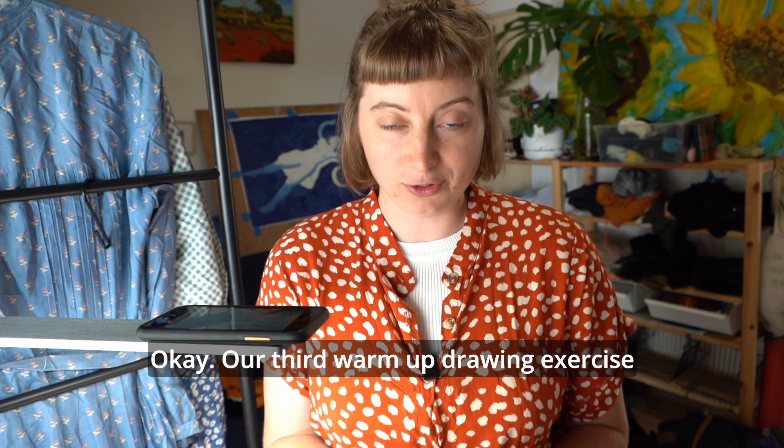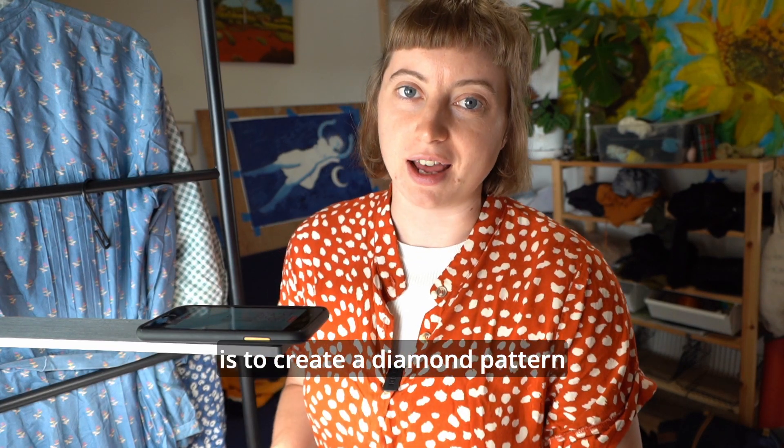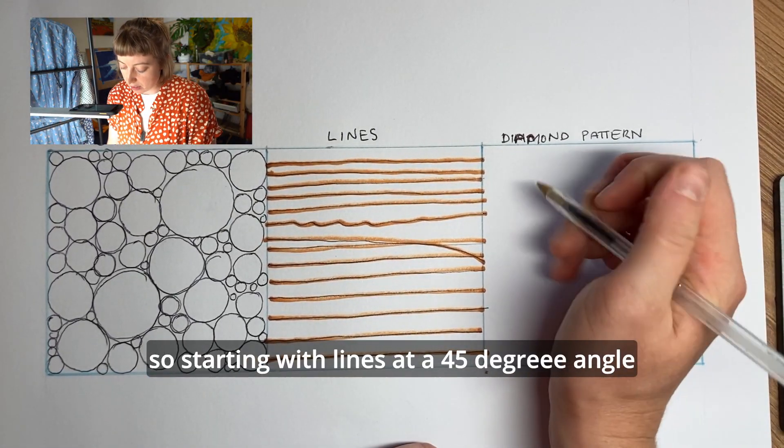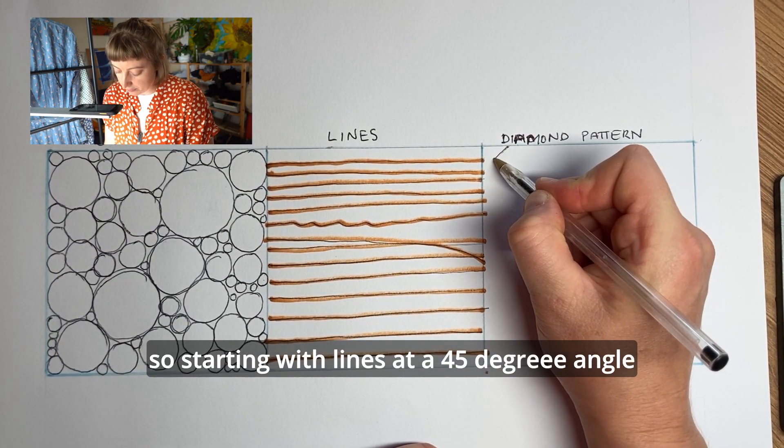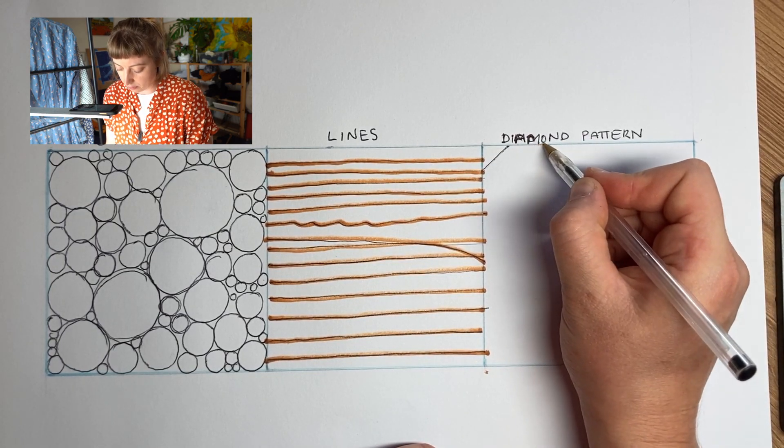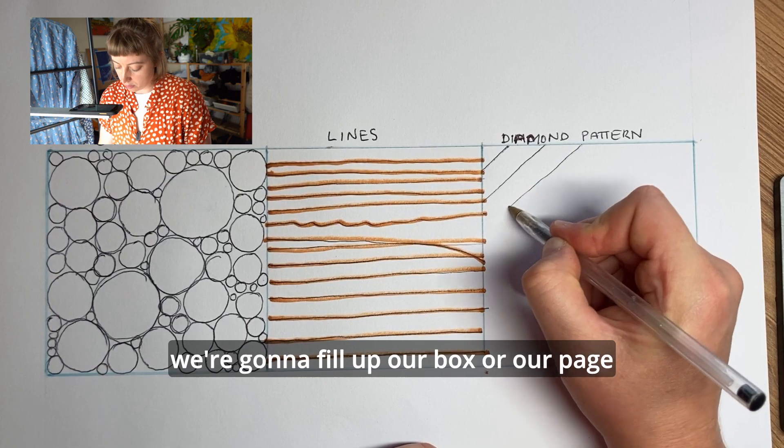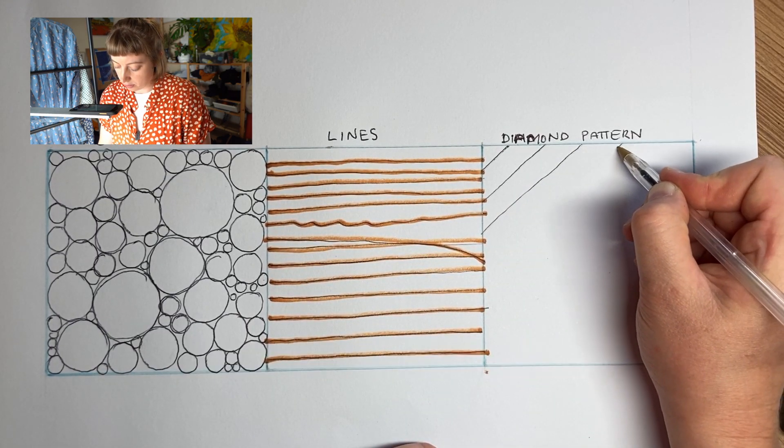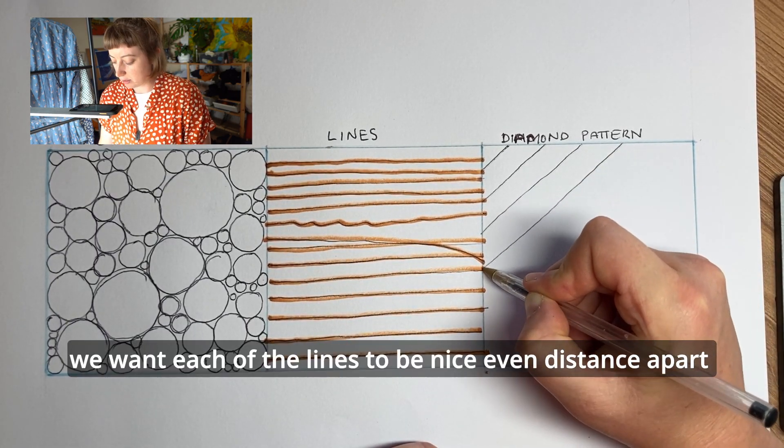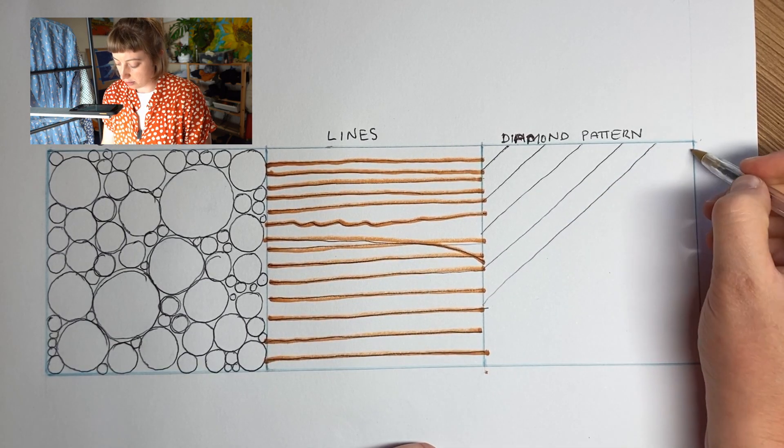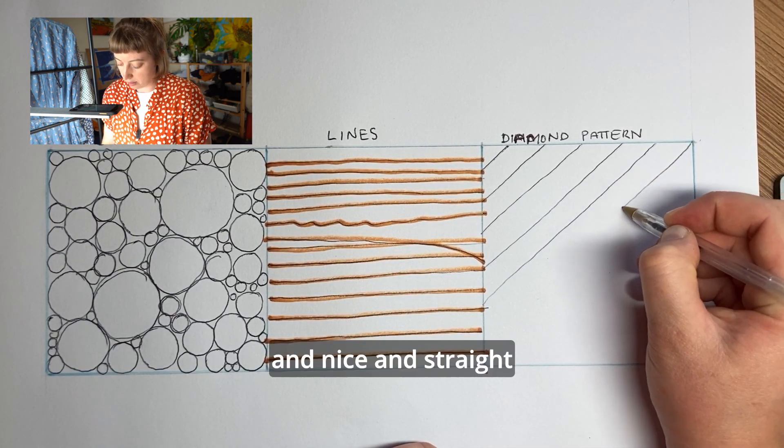Our third warm-up drawing exercise is to create a diamond pattern. Starting with lines at a 45-degree angle, we're going to fill up our box or our page. We want each of the lines to be a nice even distance apart and nice and straight.